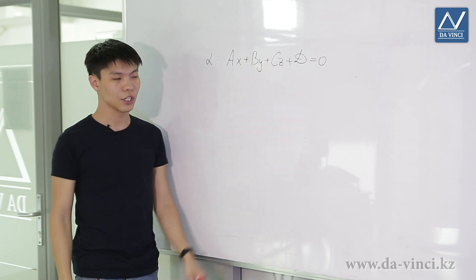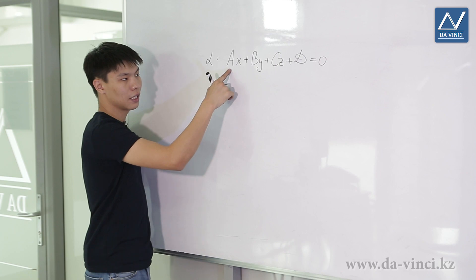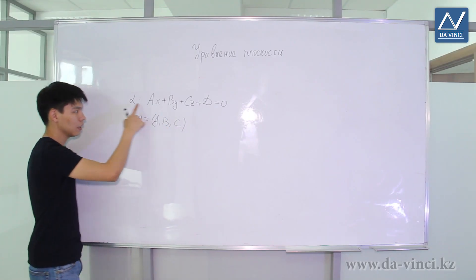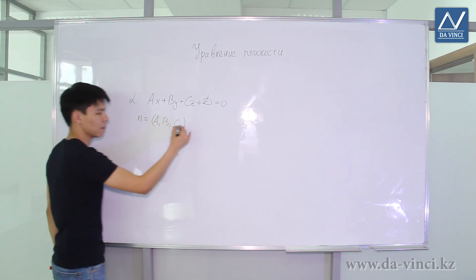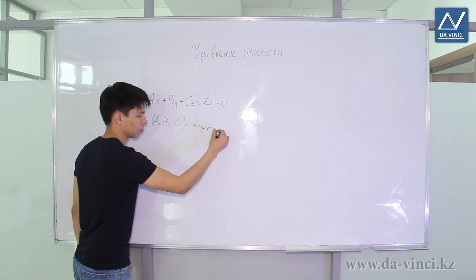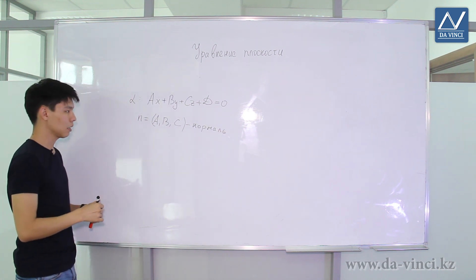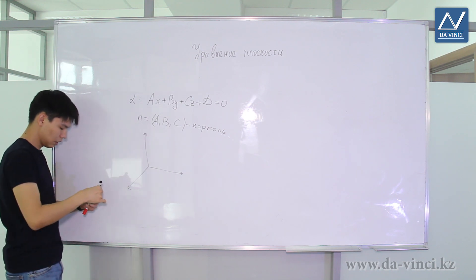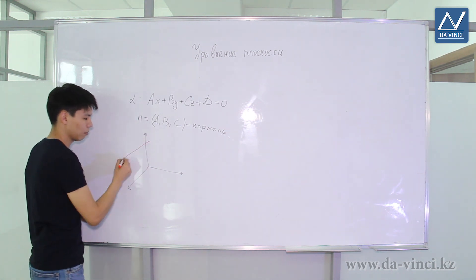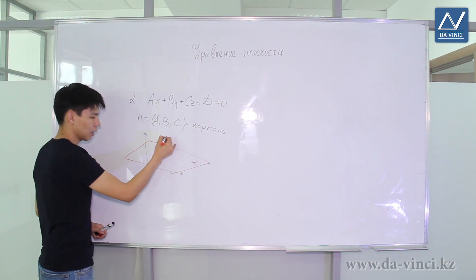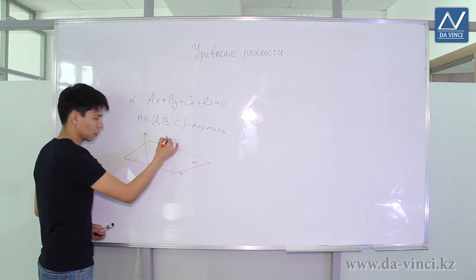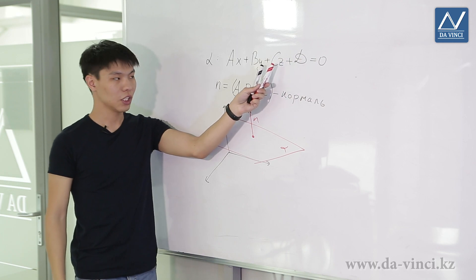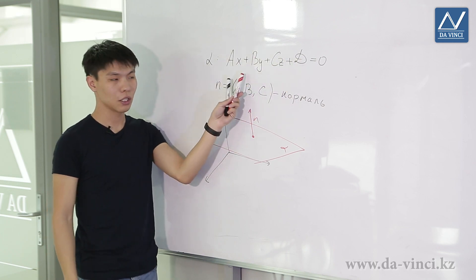A, B and C are given numbers. The vector N with coordinates A, B and C is a vector perpendicular to a given alpha plane. This vector is called the normal to the plane. For example, let's draw our coordinates and draw some plane alpha. Then the normal is a vector perpendicular to this plane.